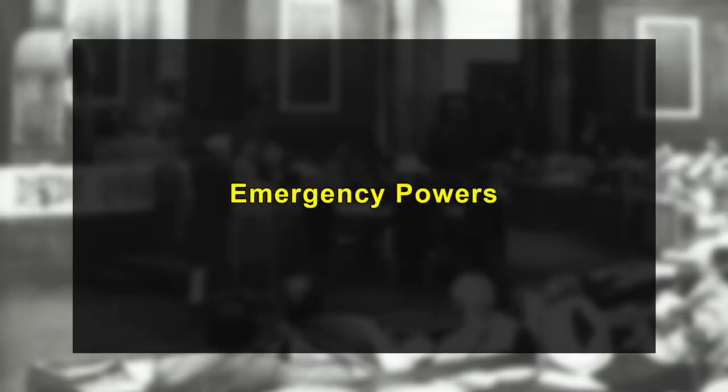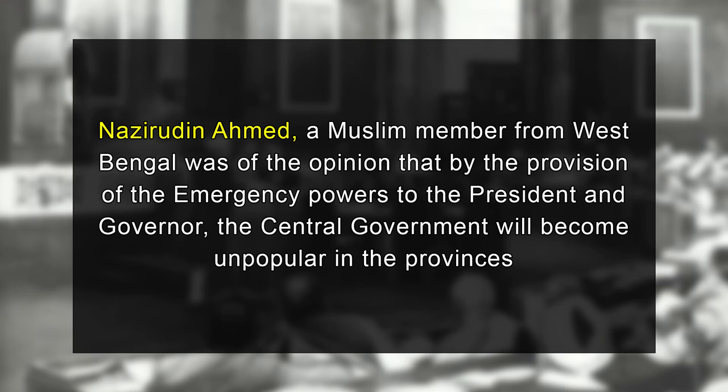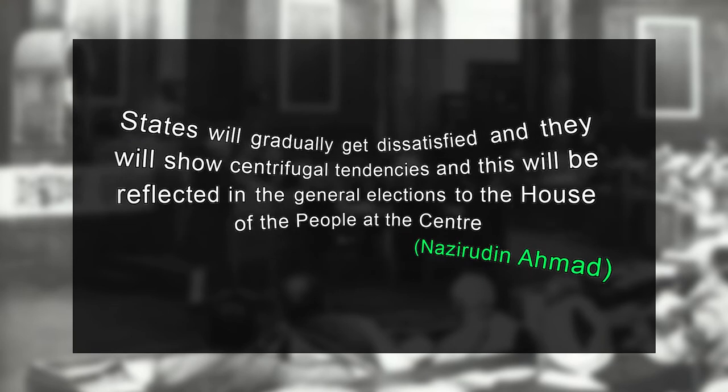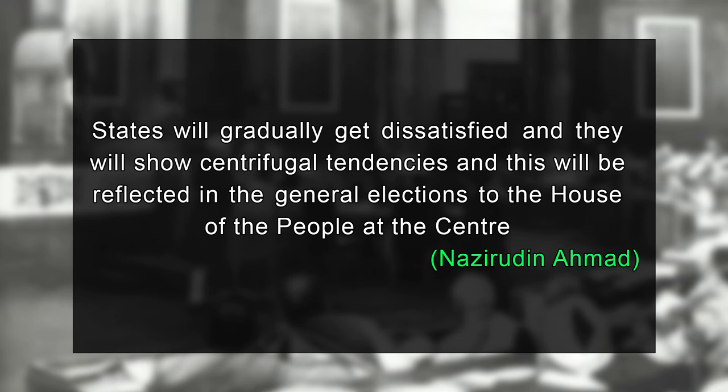Lastly, let's look at the question of emergency powers. There was worry among some members of the Constituent Assembly that the provisions of emergency powers would lead to encroachment on the state sphere, which would partially paralyze the administration. Naziruddin Ahmed, a Muslim member from West Bengal, was of the opinion that by giving provisions of emergency powers to the president and the governor, the central government would become unpopular in the provinces. According to him, the states would gradually get dissatisfied, show centrifugal tendencies, and this would be reflected in general elections. It was during this debate that the unbiased nature of the office of governor and powers of the governor to dissolve the state legislature assembly were discussed.